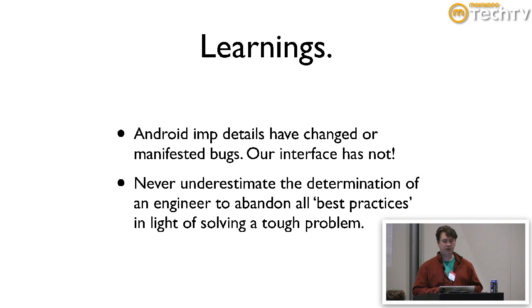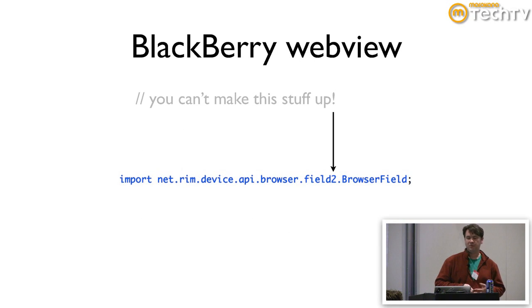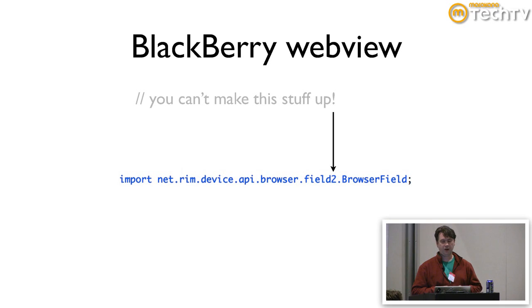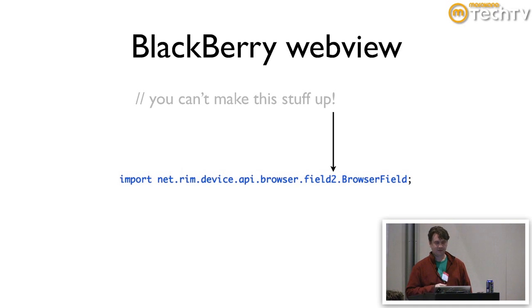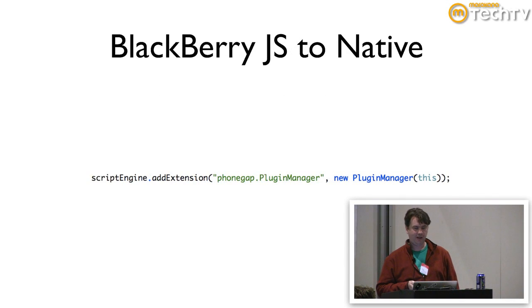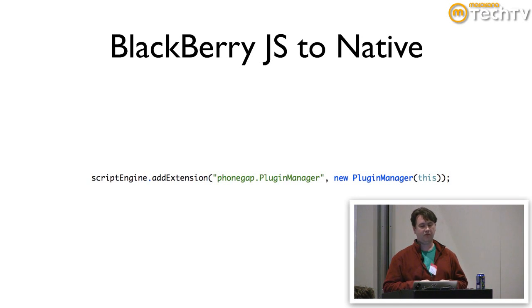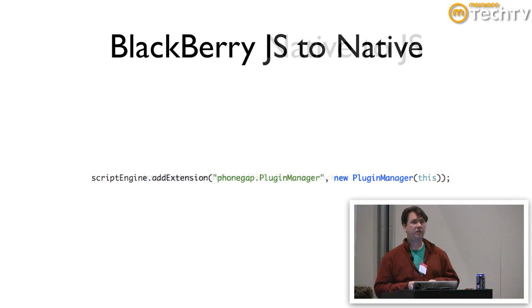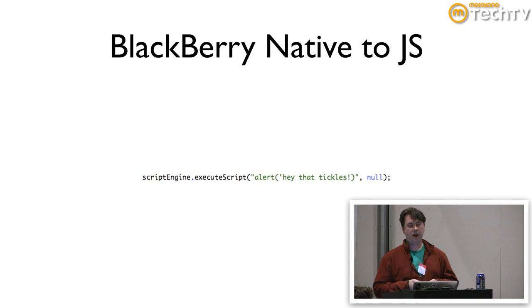We learned a lot along the way with Android, and you should never underestimate the ability of developers to put their head down and just get it done. BlackBerry with the web view — they have a nice, fully qualified namespace: net.rim.device.api.browser.field2 for some reason. BlackBerry JavaScript to native: you can call scriptEngine.addExtension, phonegap.pluginManager — this is essentially binding JavaScript to the native side, so pluginManager will get methods called directly from JavaScript. To call from BlackBerry native to JavaScript, we just call executeScript and it runs our JavaScript.